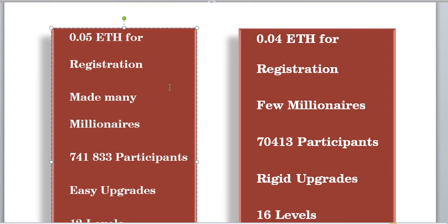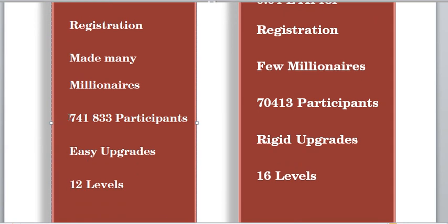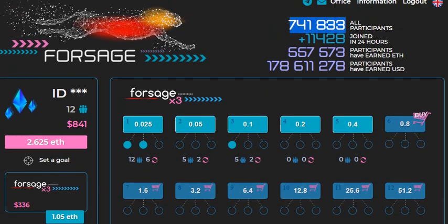ForSage has made many people millionaires over time. It launched around January or March or thereabouts, so many people have made lots and lots of money from it. I'm a living testimony — I didn't make much, maybe about $800. They have proven record, they've been around for some time and the success rate is very high. They have 741,833 participants, and this is my earnings in ForSage so far: $841, that's about 2.6 Ethereum.